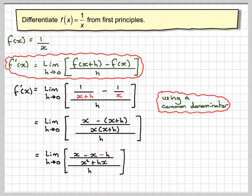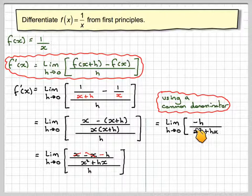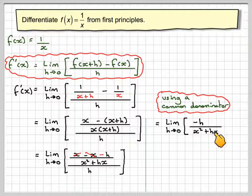Now x - x, well they will cancel each other out, so we've just got -h here. So we're going to have the limit as h goes to 0 of -h/(x² + hx).